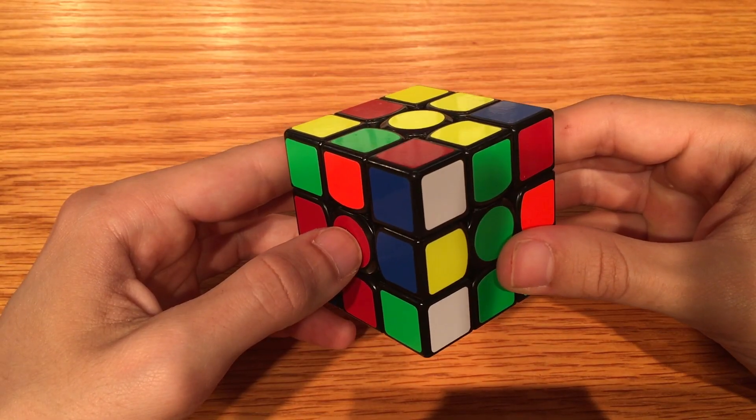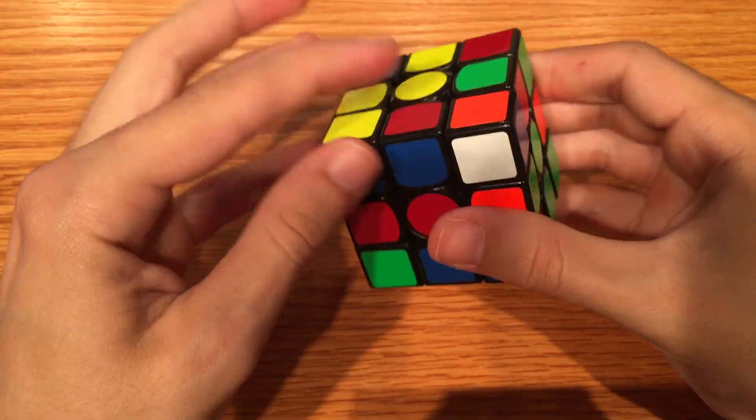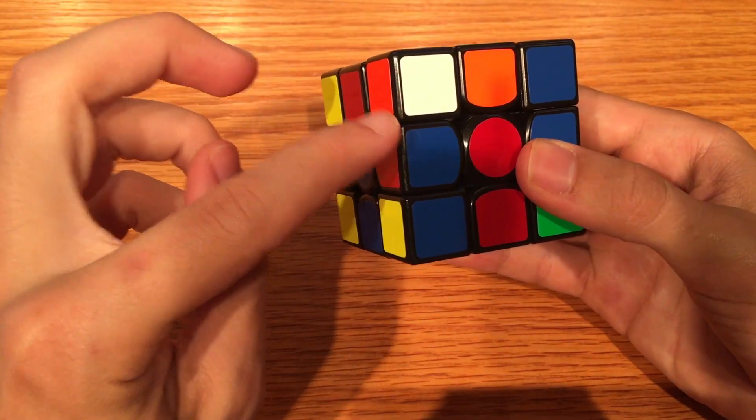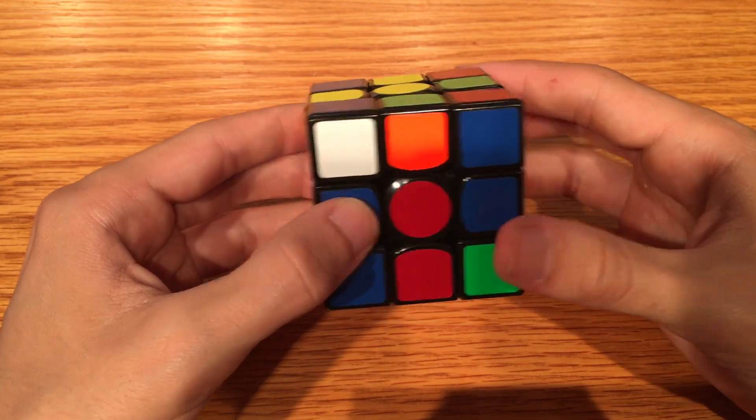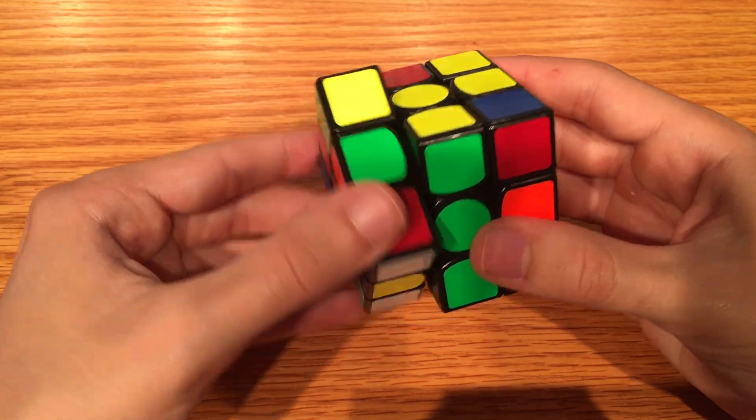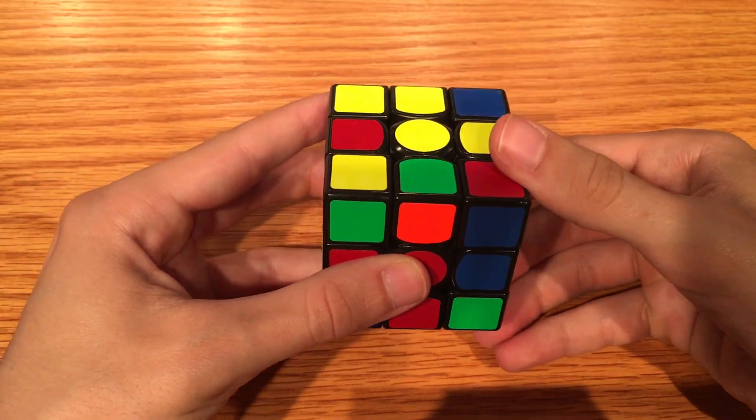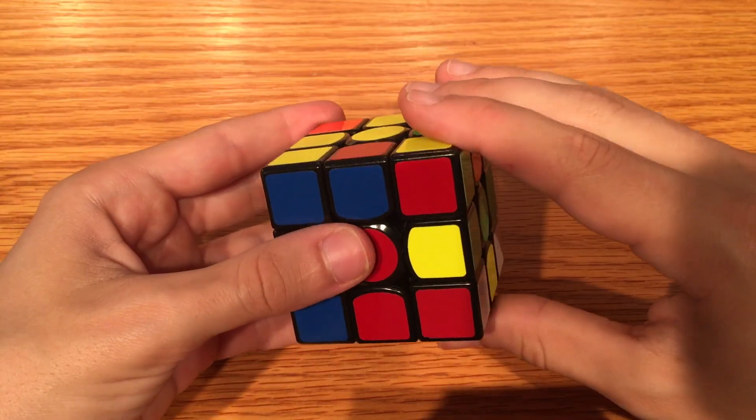Mistake number two: you're hiding the corner and moving the edge to the place where it should pair, but when you show the corner, the edge gets pushed into the middle layer. This is because you're failing to think in all three dimensions. If hiding the corner like this won't work, look at it from the other angle and hide it like this. Now your edge will stay put when you show the corner.